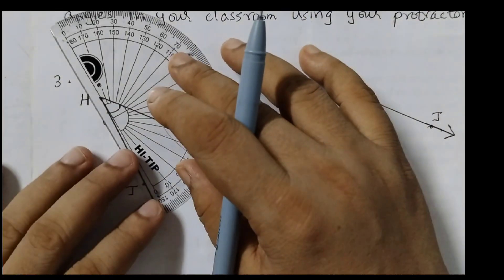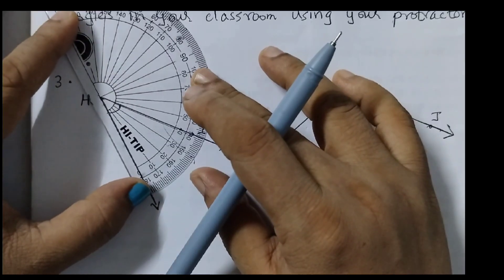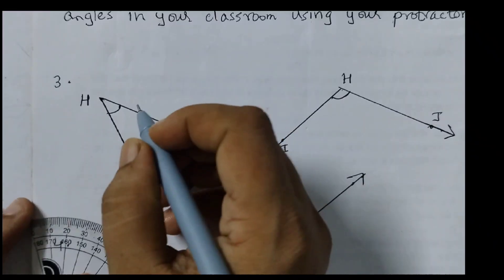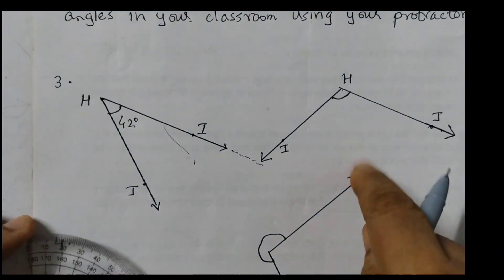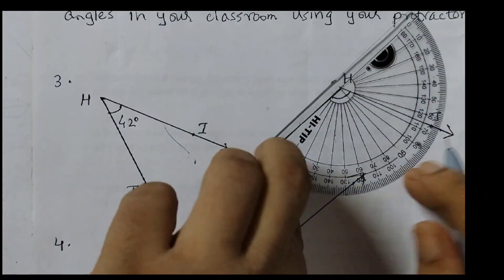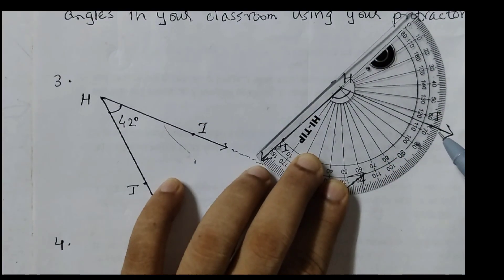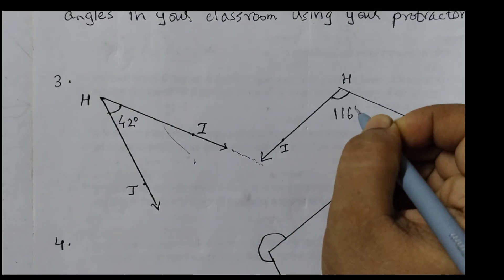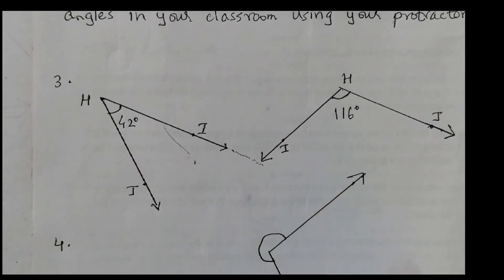Now we will use our regular protractor to measure these angles. Starting the reading from zero, this comes to approximately 42 degrees. And for the next angle, starting from zero — 0, 10, 20 — this is 116 degrees. So the first angle is 42 degrees and the second is 116 degrees.